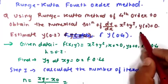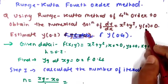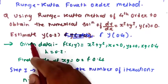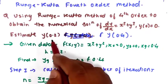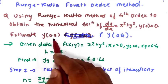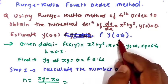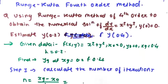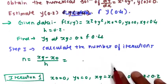Some given conditions are there: y equal to 0 when x equal to 0, and we have to estimate y at x equal to 0.2 and y at x equal to 0.4. These are the given conditions.